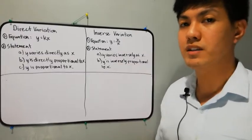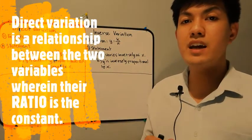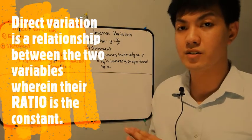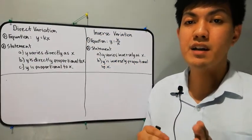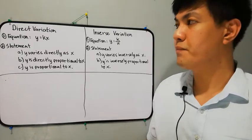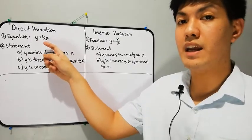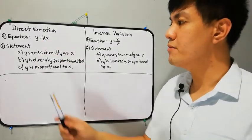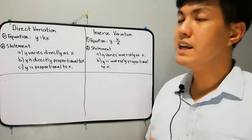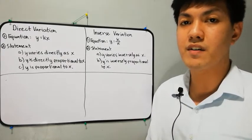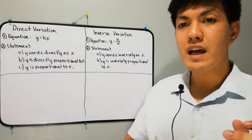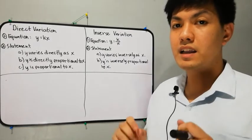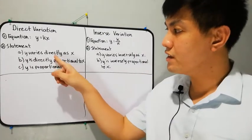What is direct variation? When we say direct variation, it is a relationship between two variables wherein the ratio of the two variables is the constant. In direct variation, the equation is y is equal to kx, where y and x are the variables and k is the constant. We can easily identify if a statement is direct variation because of the word 'directly.'